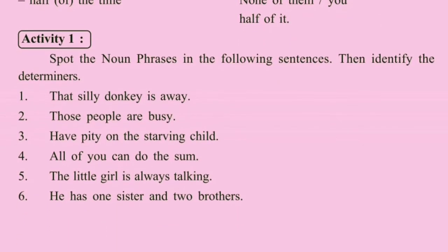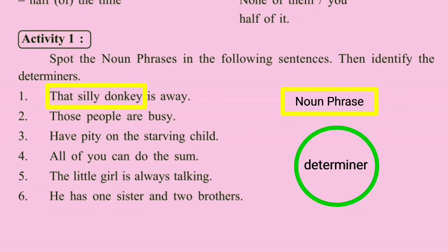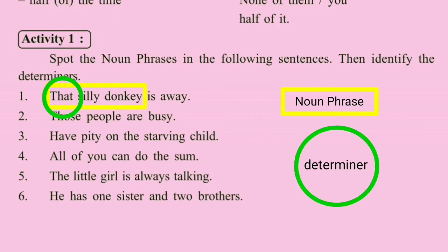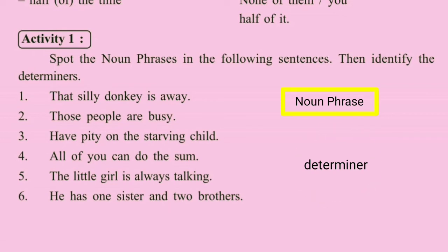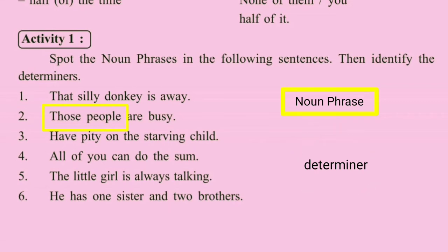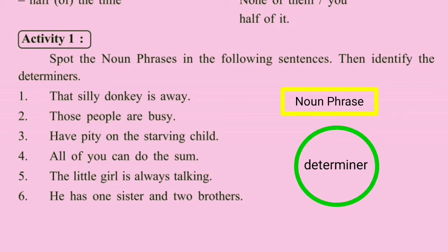Activity One: Spot the noun phrase in the following sentences, then identify the determiners. 'That silly donkey' is a noun phrase with head noun 'donkey'. 'Silly' is an adjective and 'that' is a demonstrative determiner used as a pre-modifier. 'Those people are busy' — 'those people' is a noun phrase with head noun 'people' and 'those' as a demonstrative determiner.